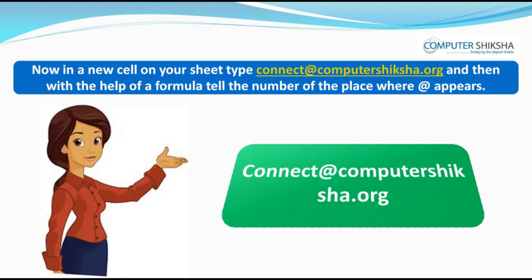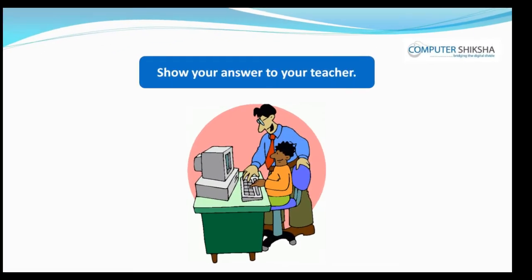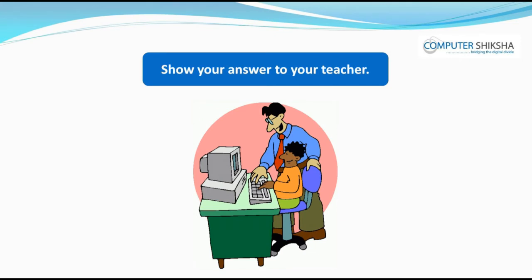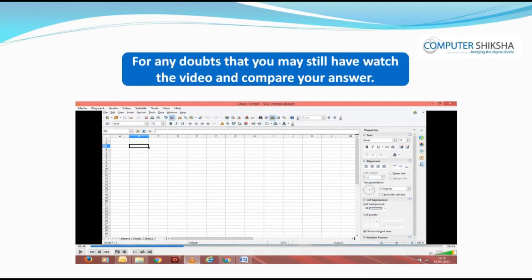Now, in a new cell on your sheet, type 'connect@computershiksha.org' and then with the help of a formula, find the number of the place where the at-the-rate symbol appears. Show your answer to your teacher. For any doubts, watch the video and compare your answer.